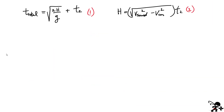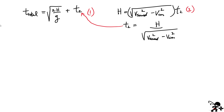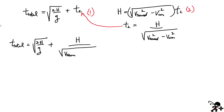Here are the two equations. From equation two, T2 = h / √(v_sound² − v_car²). Substituting into the first equation gives: T_total = √(2h/g) + h / √(v_sound² − v_car²). This is now one equation with only one unknown, h. It looks complicated because h appears both inside a square root and linearly, but here's a little trick — we can rewrite it as a quadratic equation.